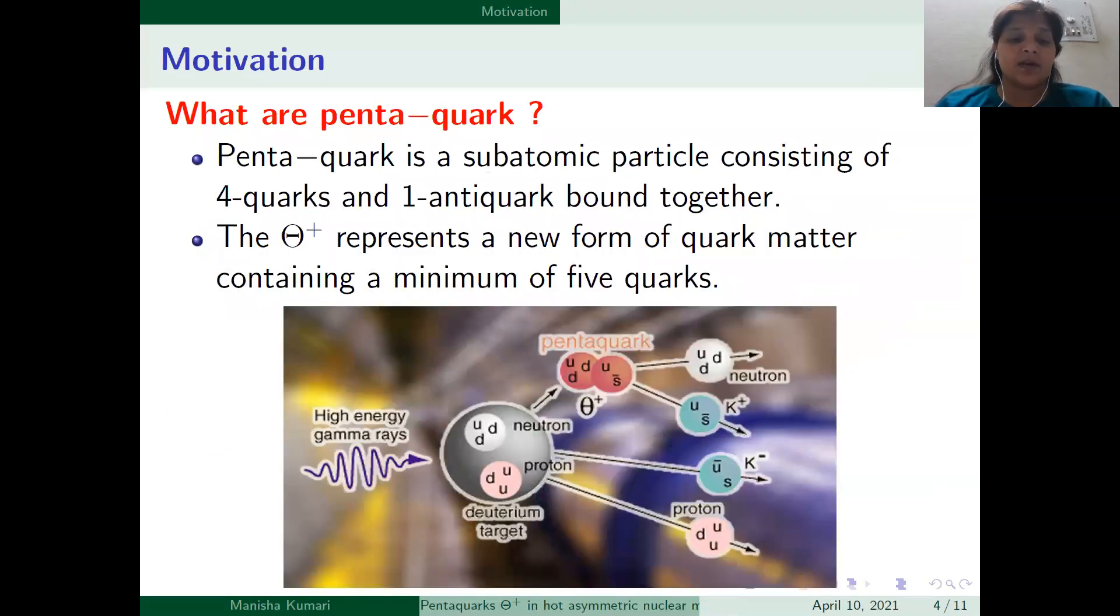Now we come to the pentaquark. Pentaquark is a subatomic particle consisting of four quarks and one anti-quark bound together. Theta plus represents a new form of quark matter containing a minimum of five quarks, having structure nK plus pi zero and pK zero pi zero.